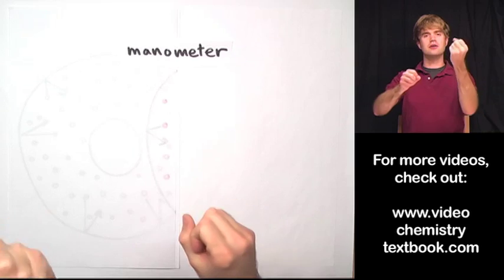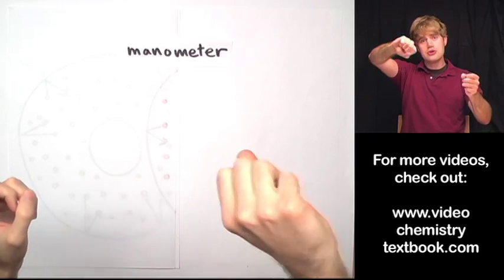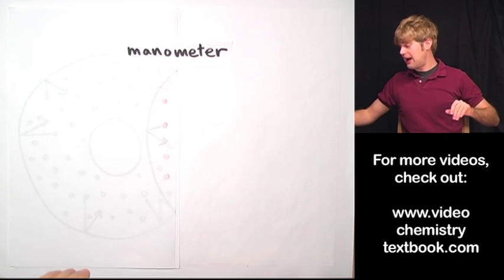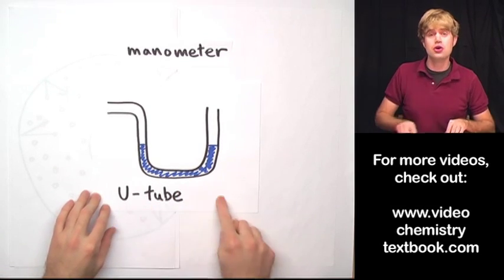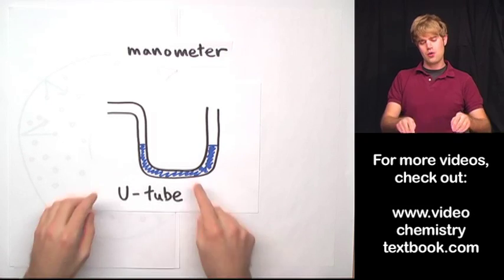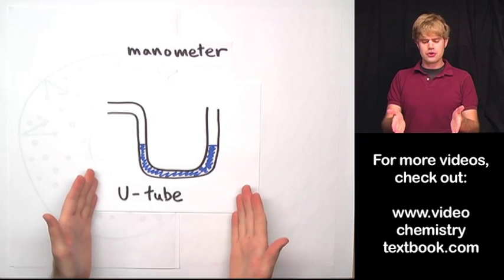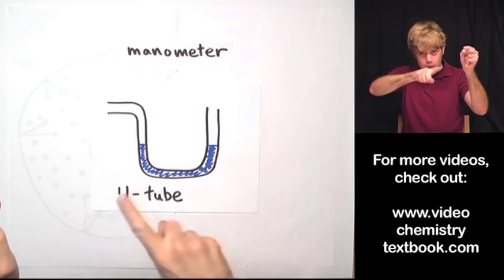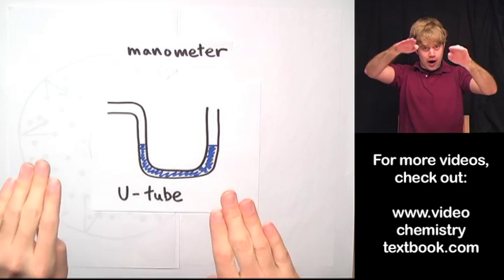And here is a very simple thing that I can do to make a device, a manometer, that measures pressure. Imagine that I have a glass tube and I bend this tube into a U shape. And then I fill it with water. I get something that's called, very creatively, a U-tube, long before they had the video sharing website. You can tell that whoever named this a U-tube was very creative. And a U-tube is just this bent piece of glass with water in it.